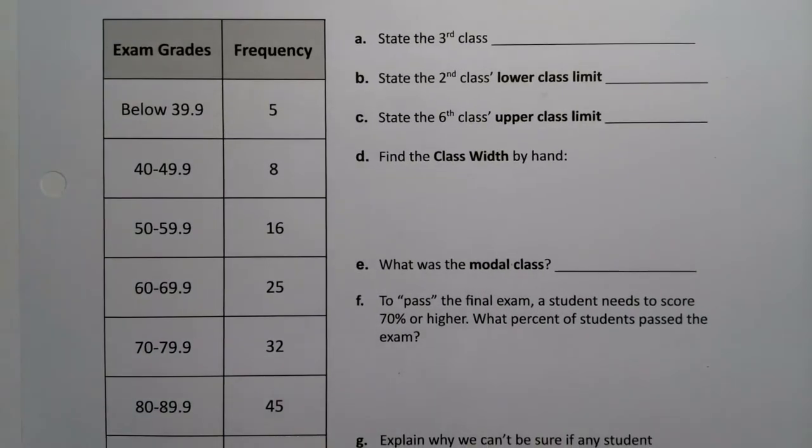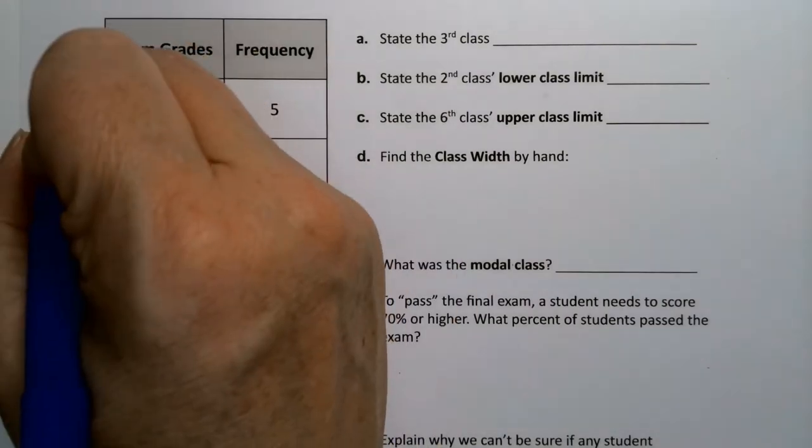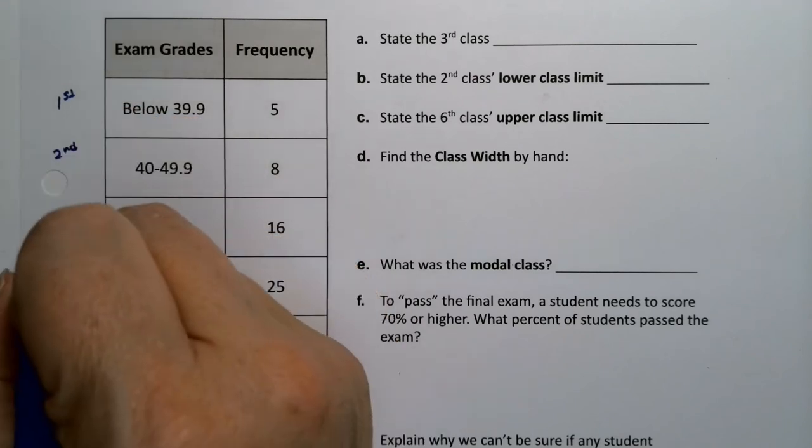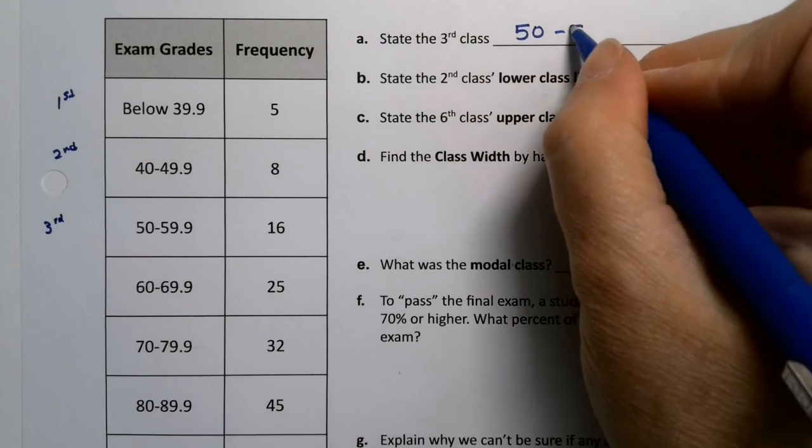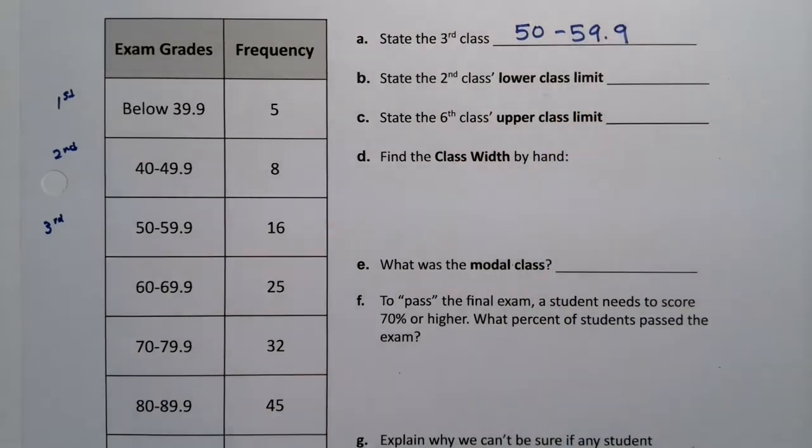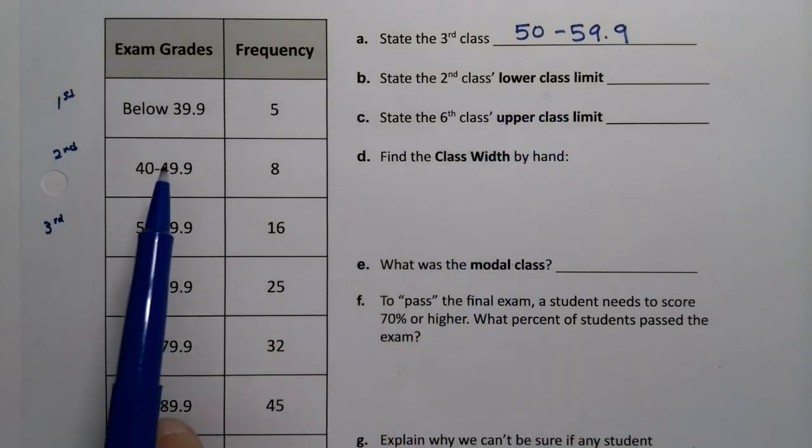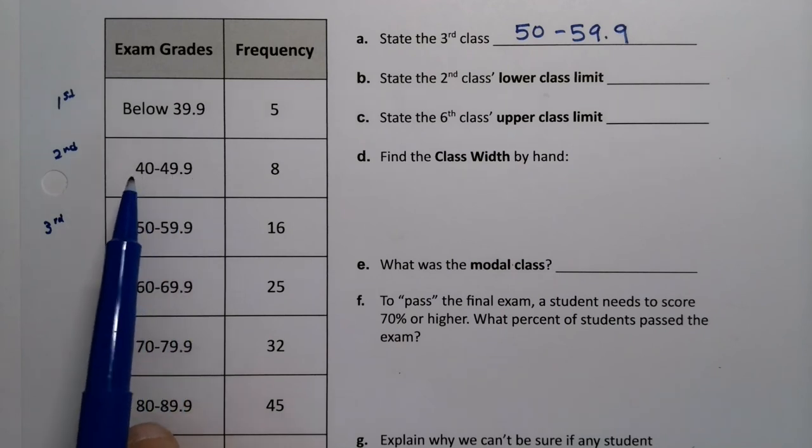Now the first thing they want us to do is state the third class. So this is the first class right here. This is the second class right here. So the third class is this one, which is 50 to 59.9. Now what about the second class's lower class limit? The second class is this one, 40 to 49.9. So the lower class limit would be 40.